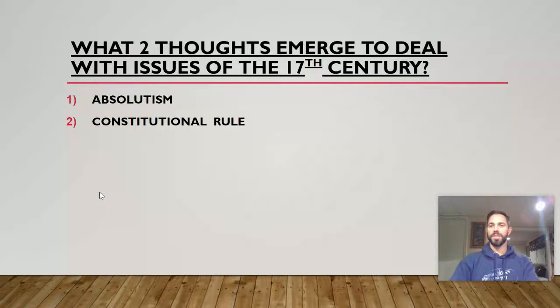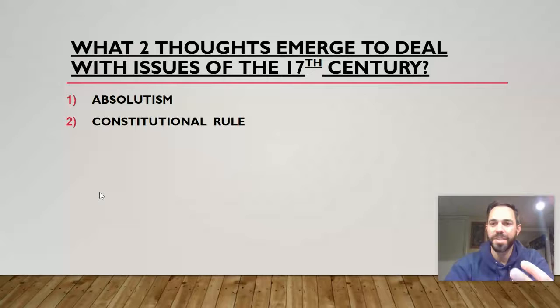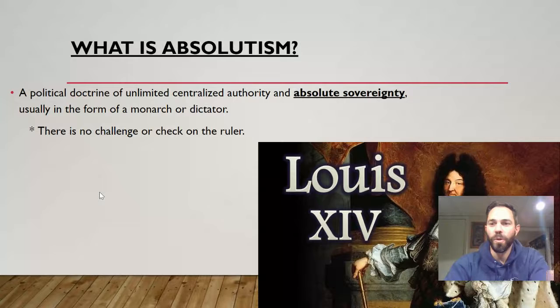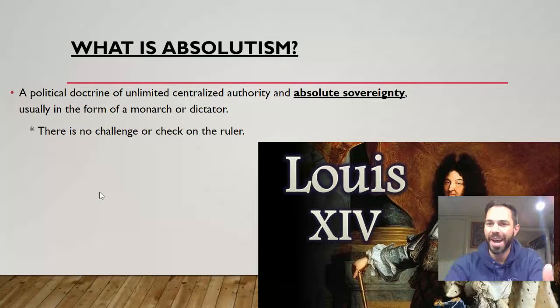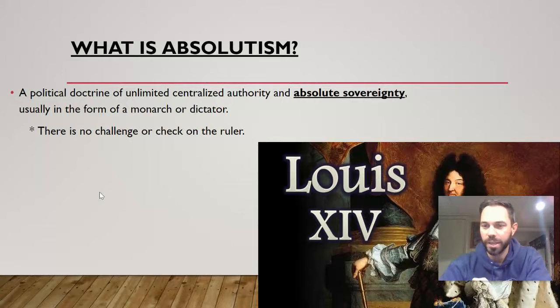The two things that emerge to deal with the crises of the 17th century are absolutism and constitutionalism, which we'll spend a decent chunk of time on, especially focusing on England. We're probably more familiar with the constitutional side of things from a U.S. civics perspective. So what is absolutism? It is what it sounds like — absolute sovereignty or control in the form of a monarch or dictator, usually. King Louis XIV will be one of the prime examples we look at, and the other one we'll focus on is Peter the Great of Russia. The big thing is there's no challenge or check on these absolutist rulers — what they decide is final, end of story. There are no checks and balances or separation of powers like we think of in the U.S. system.